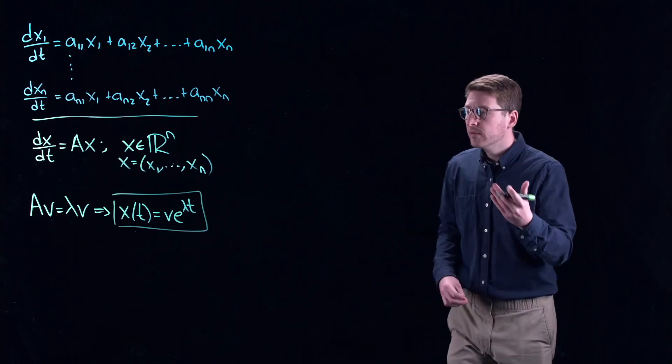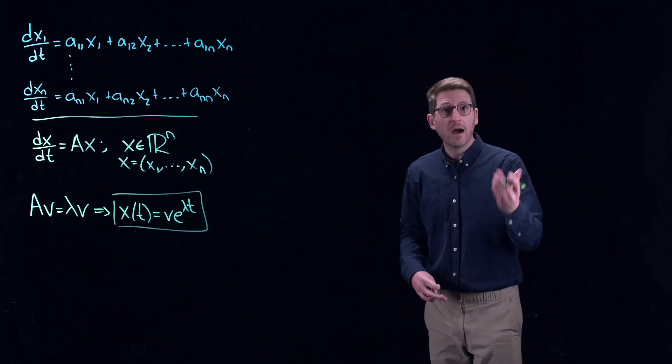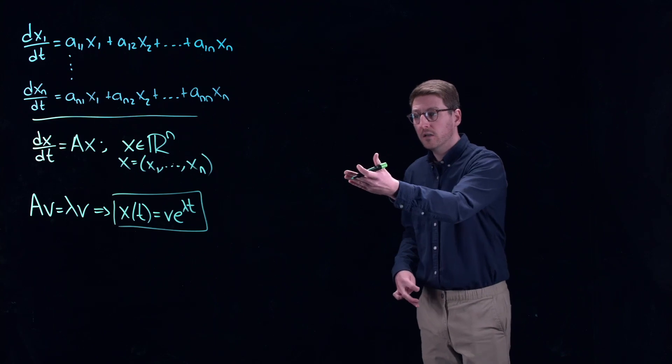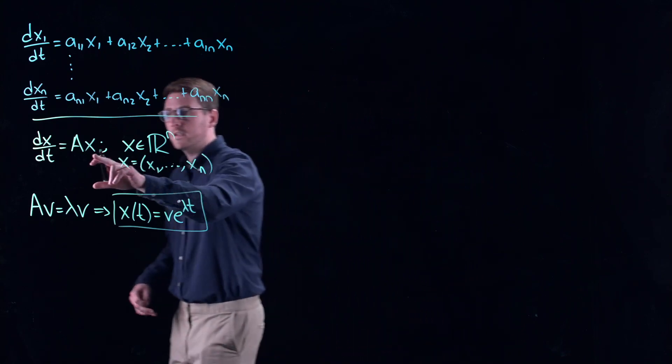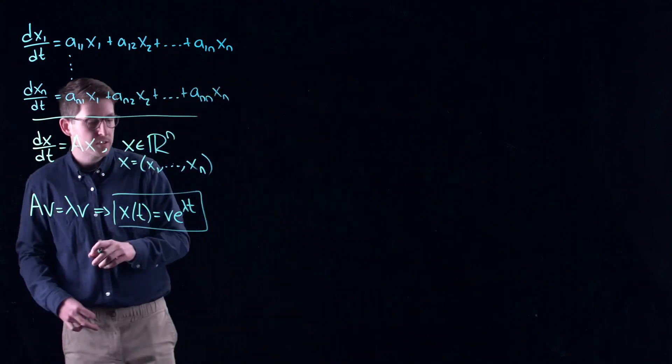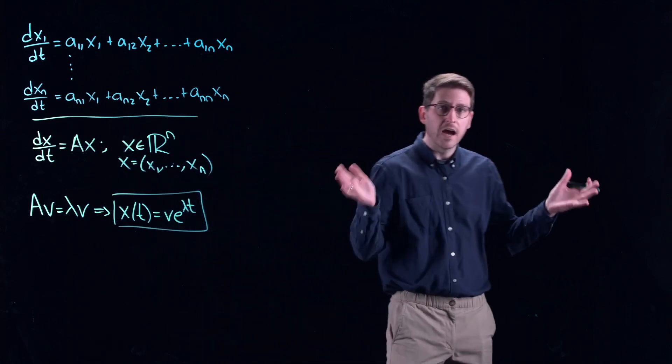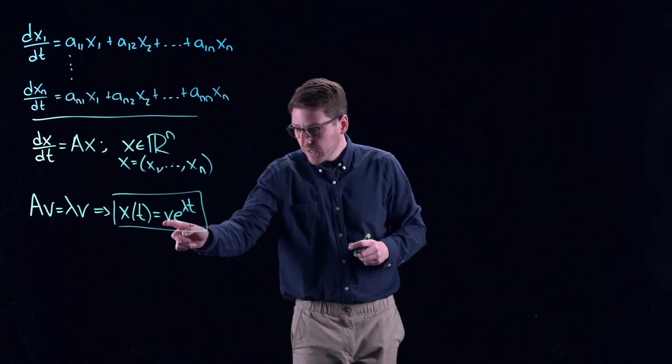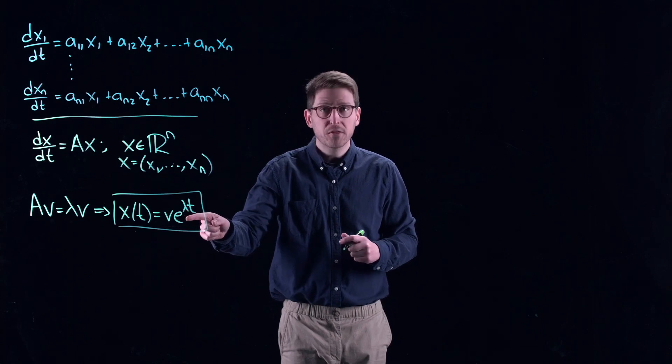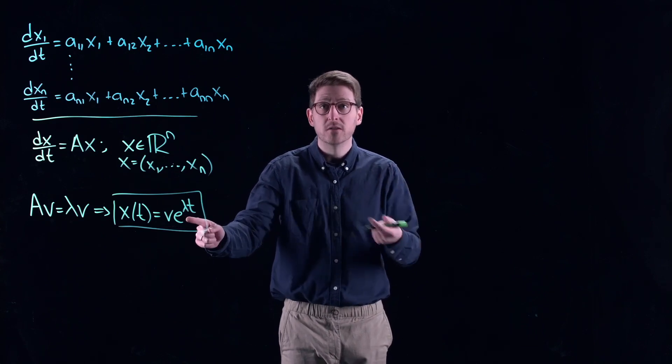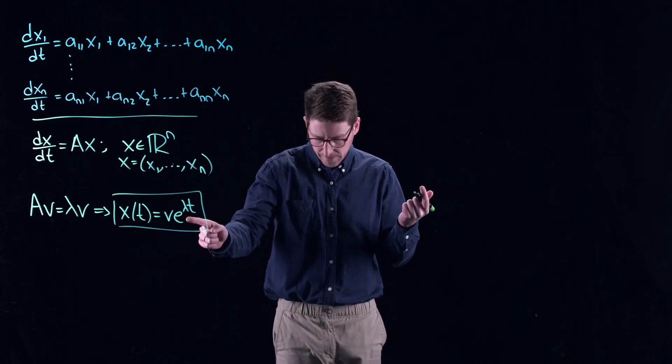Now, if you have all of the eigenvalues, you can use the fact that this is a linear system and you can put these things in superposition. So instead of doing a span of the eigenvectors, you would do a span of the eigenvectors with this time component as well on top of this thing.